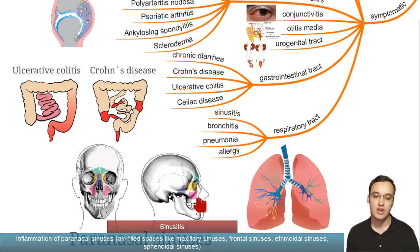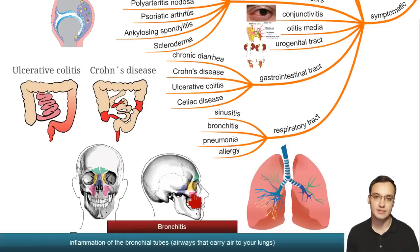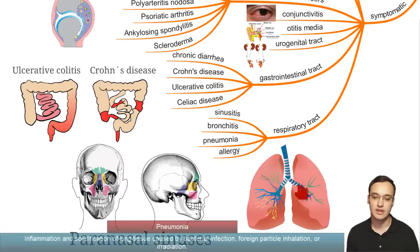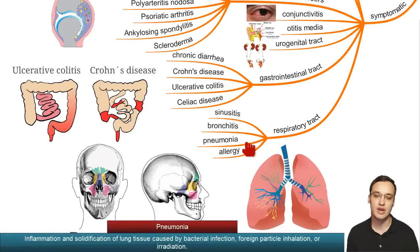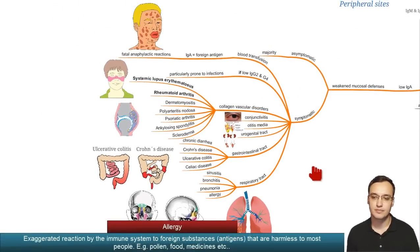In the respiratory tract you can see sinusitis — infection of the paranasal sinuses, which are air cavities in the bone. You can also see bronchitis, where the bronchi are infected, pneumonia, and allergy in the respiratory tract. These are the main symptoms associated with IgA deficiency.